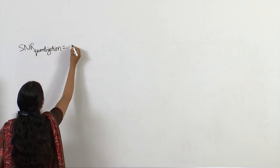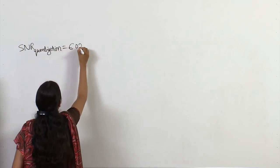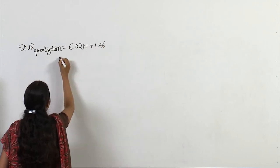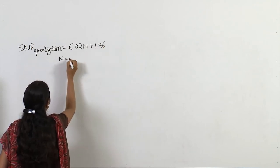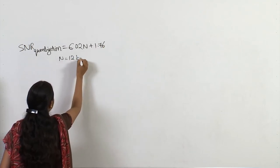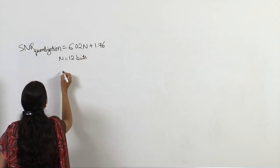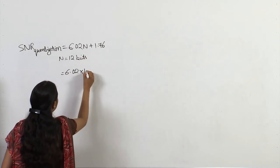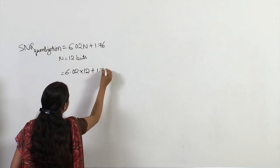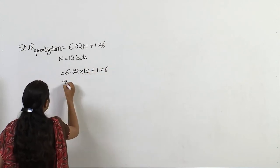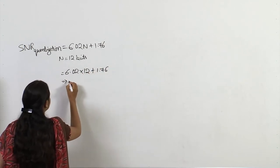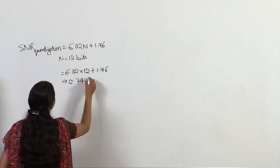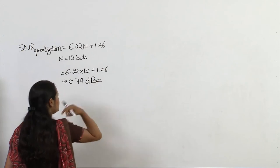The SNR due to quantization noise is given by 6.02 × N + 1.76, where N is 12 bits. So it is 6.02 × 12 + 1.76, which comes out to almost 74 dBc.